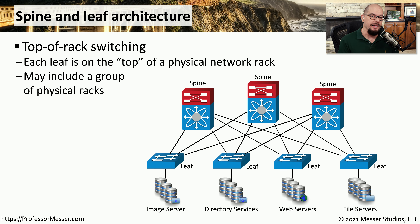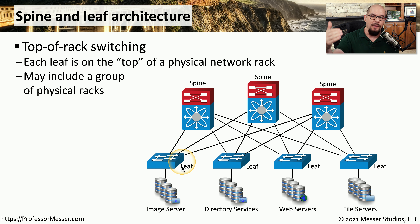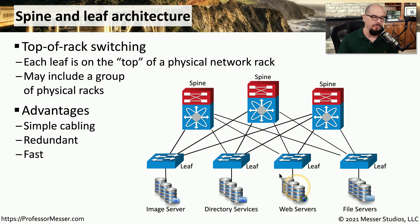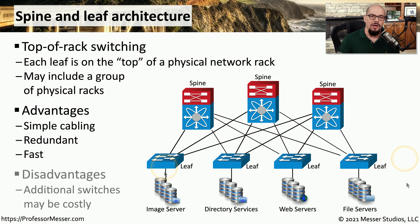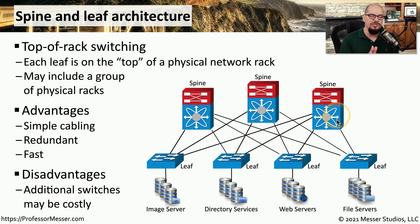It's common to associate the spine and leaf architecture with top-of-rack switching, referring to the physical network rack in a data center. You can think of all leaf switches as being on the top of a particular 19-inch rack, with image servers, directory servers, web servers, or other services in the rest of the rack. This allows simple cabling between leaf and spine with built-in redundancy and very efficient, fast communication. However, adding another rack requires a new leaf switch and additional connections to all spine switches, which can rapidly increase costs.